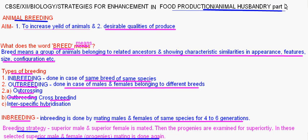Animal Husbandry Part 2, from the chapter Strategies for Enhancement in Food Production. In this, animal breeding is discussed. The aims of animal breeding are to increase the yield of animals as well as to obtain desirable qualities of produce.